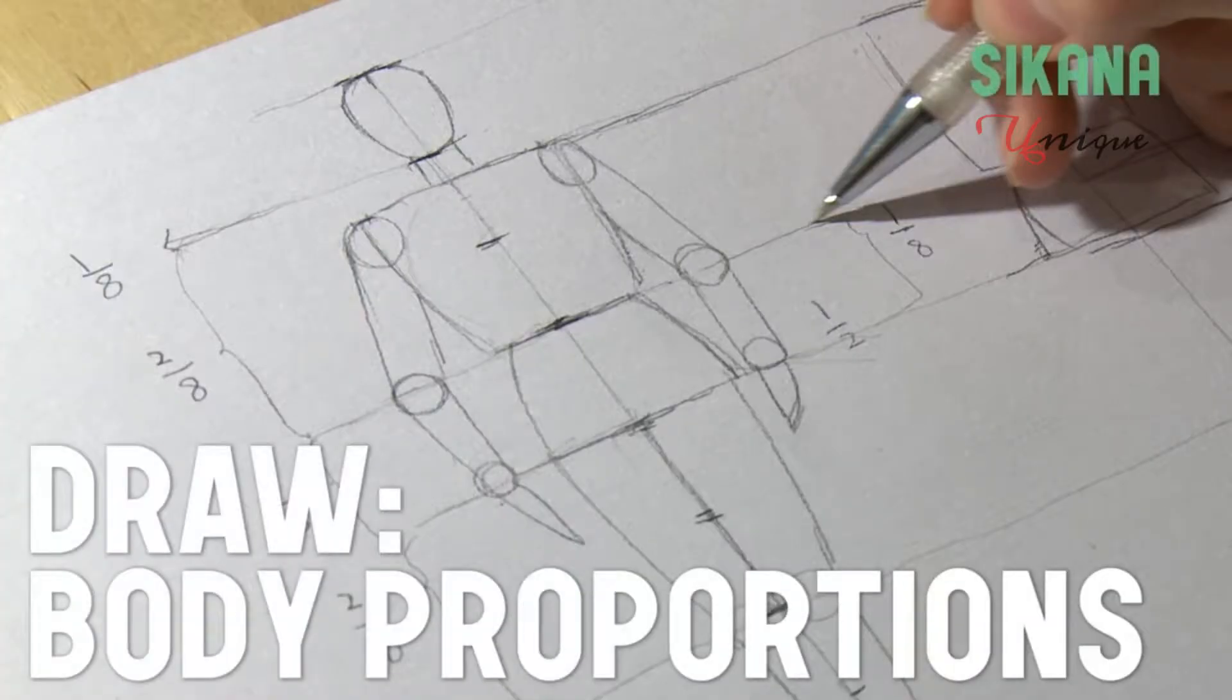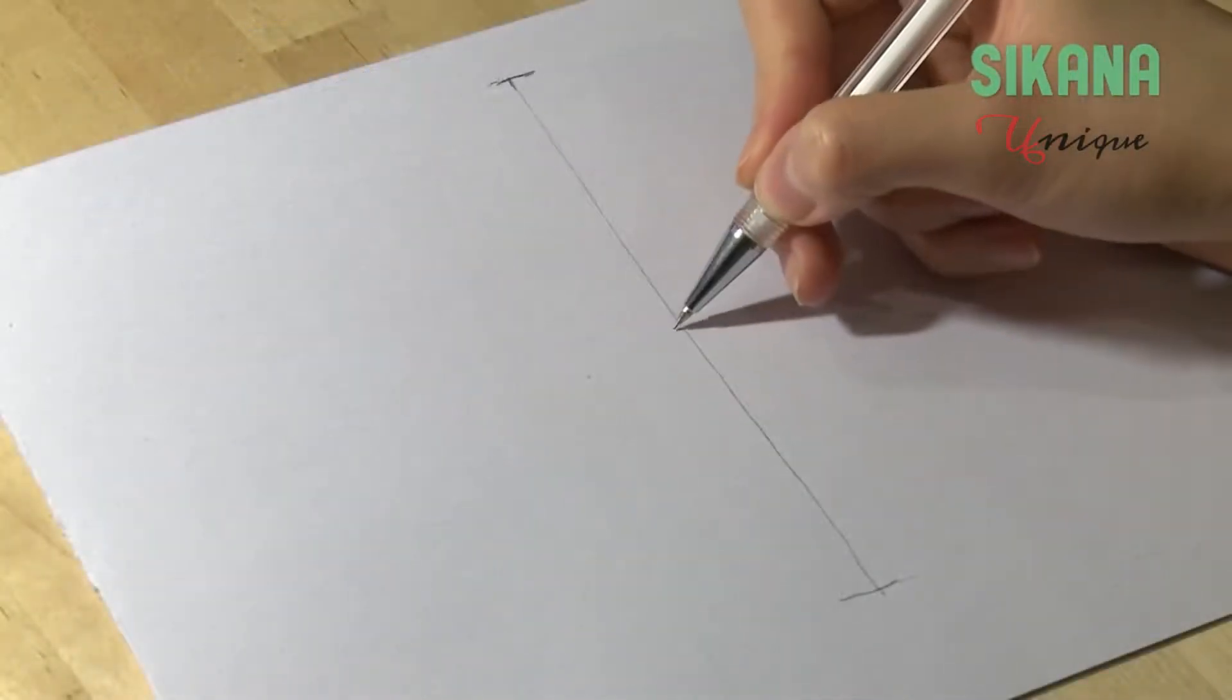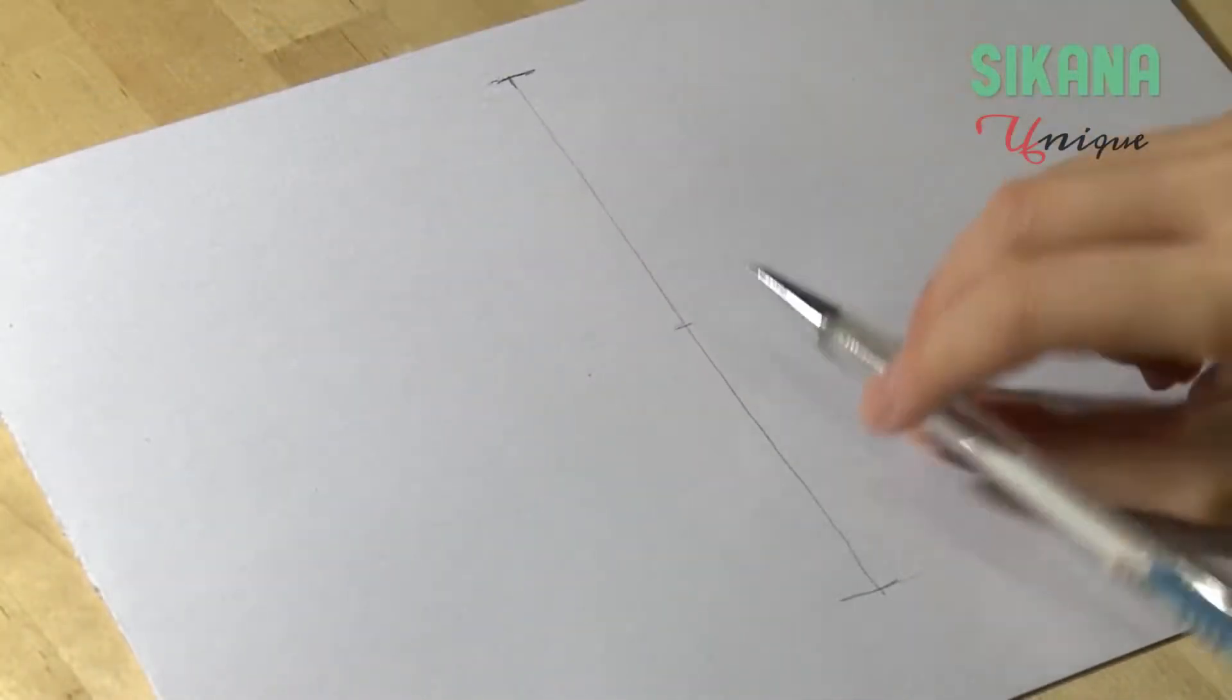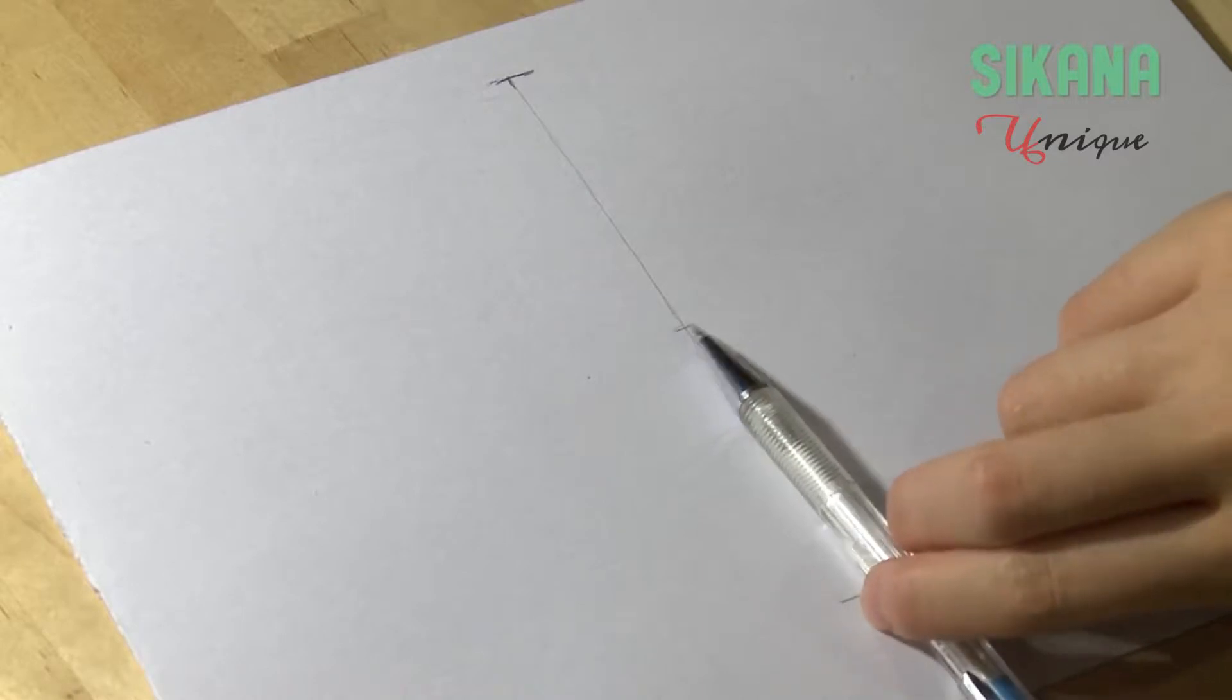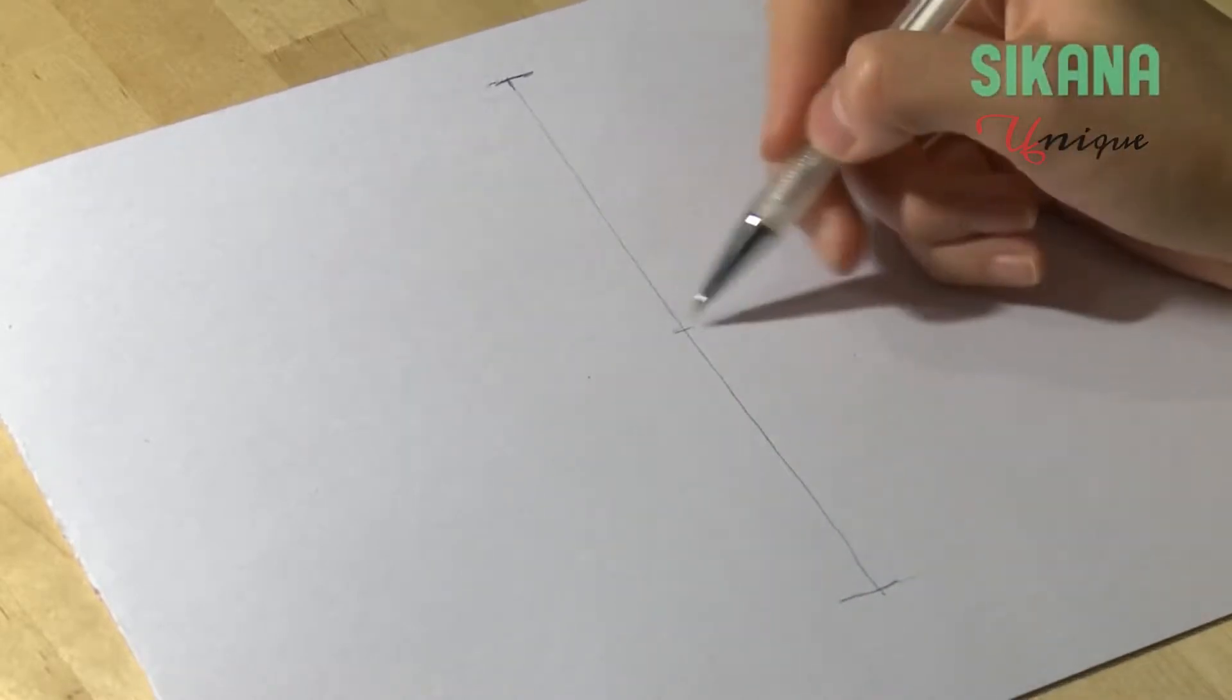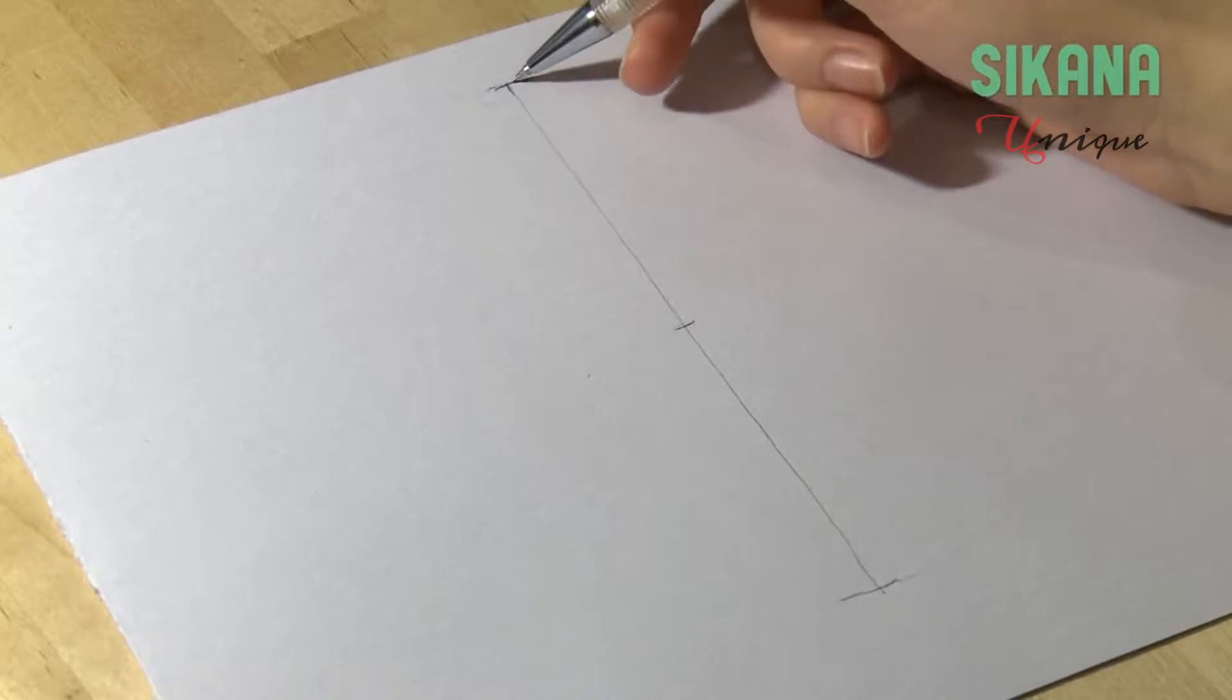How to maintain the proportions of the human body? First, create eight equal parts for the body. The head is one part. Draw a vertical line and make eight equal segments.